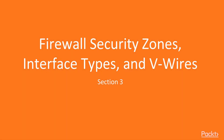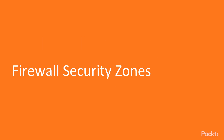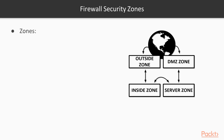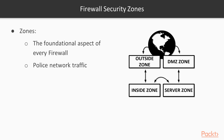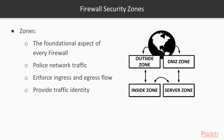Let's continue on to session three: firewall security zones, interface types, and v-wires. When it comes to a security appliance — in this case Palo Alto firewalls — the most important aspect is how you can classify or segment your traffic and provide identity to that traffic. The most important aspect of any firewall is its security zones, and we're going to discuss how Palo Alto firewalls are configured when it comes to zones.